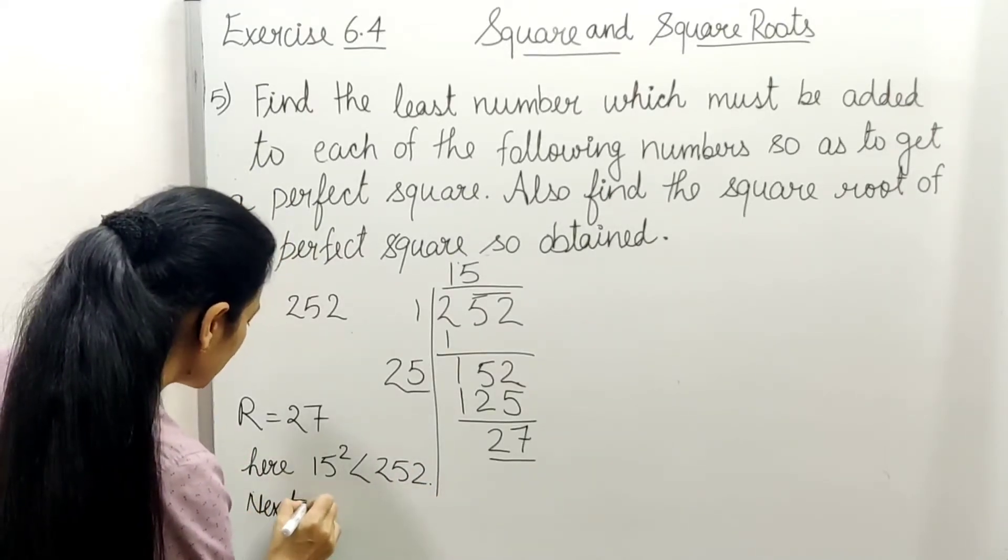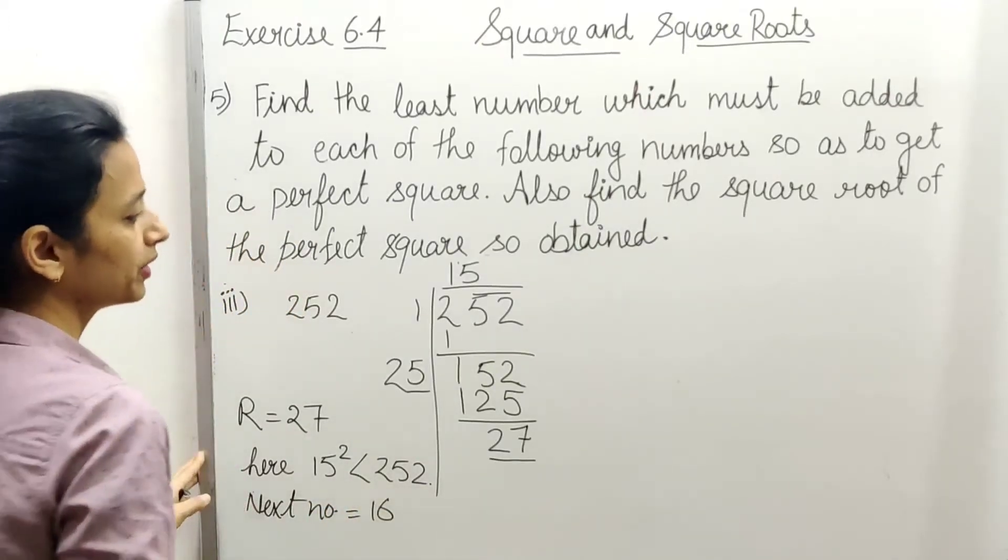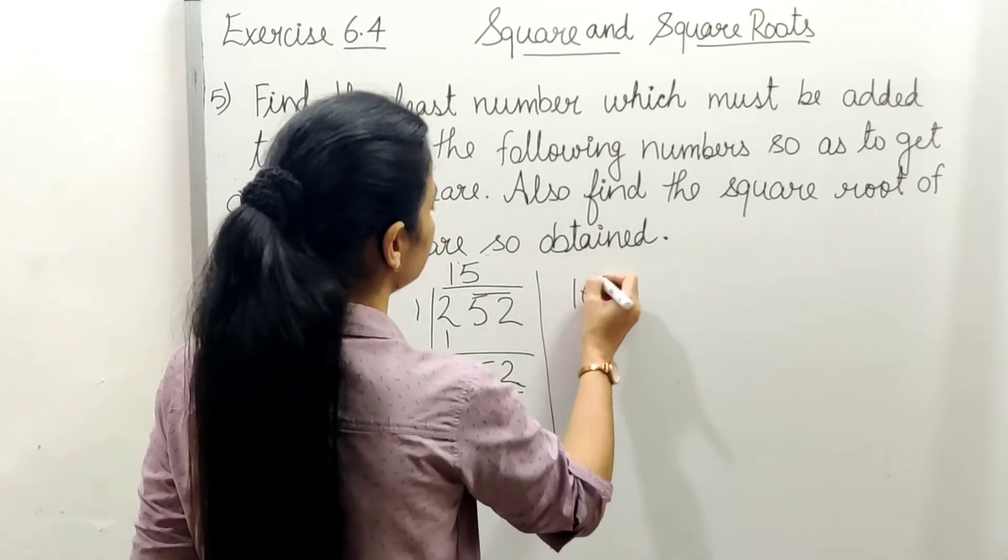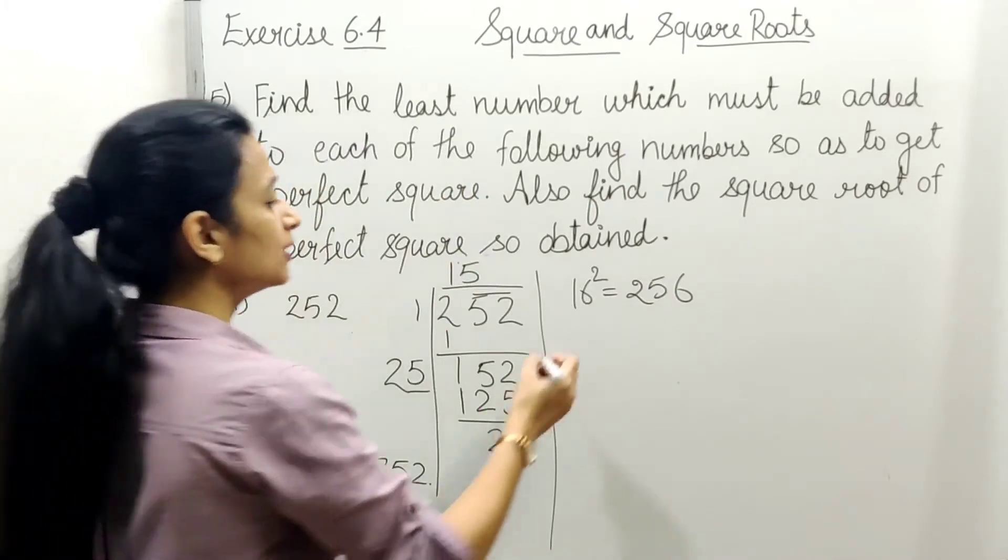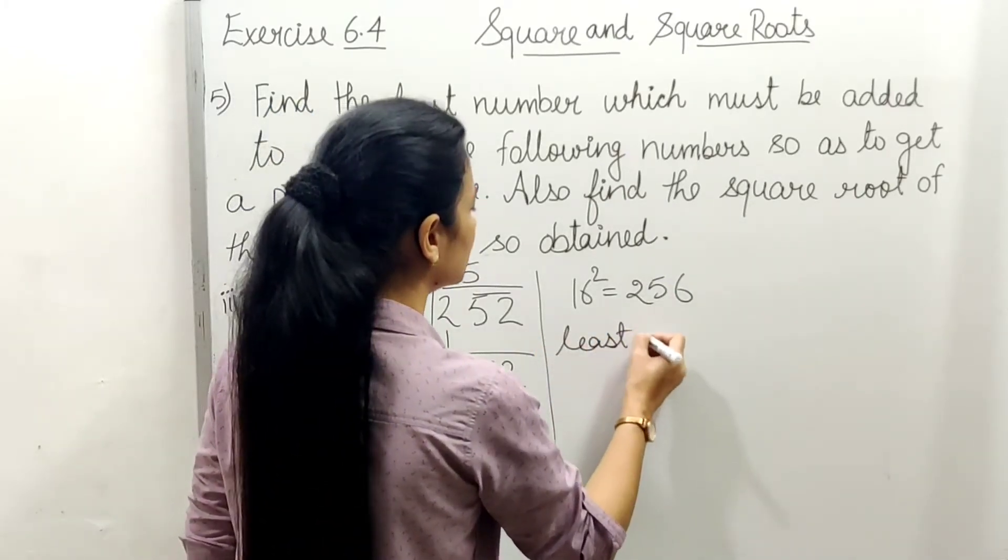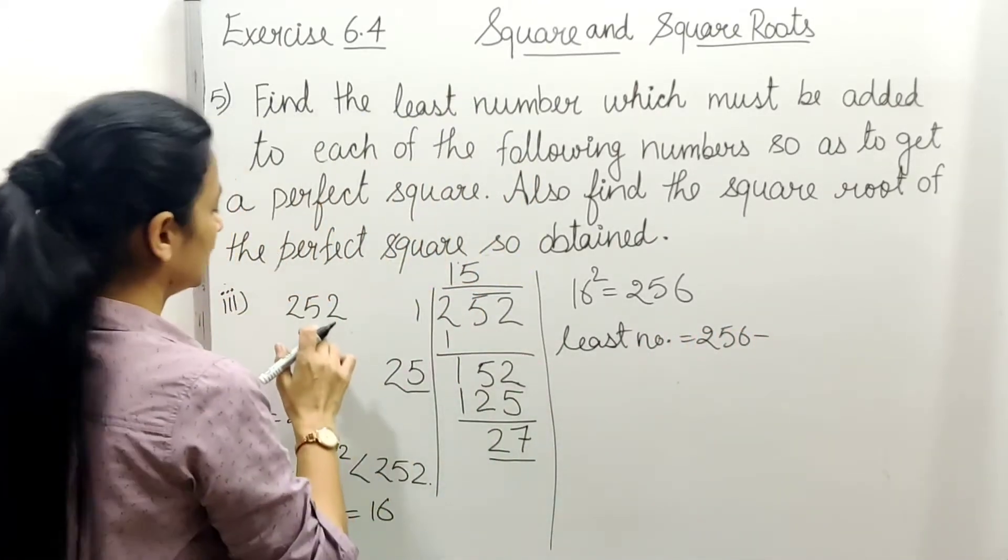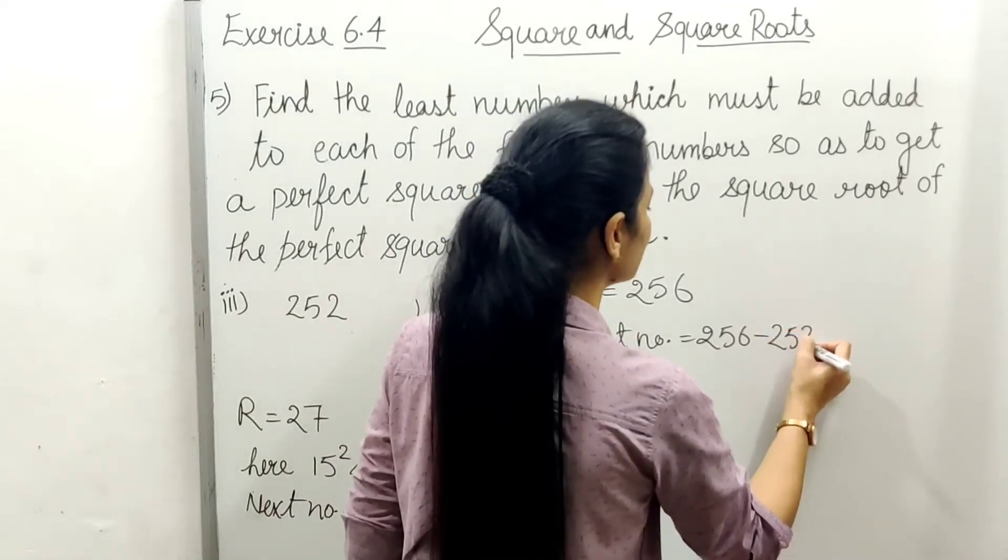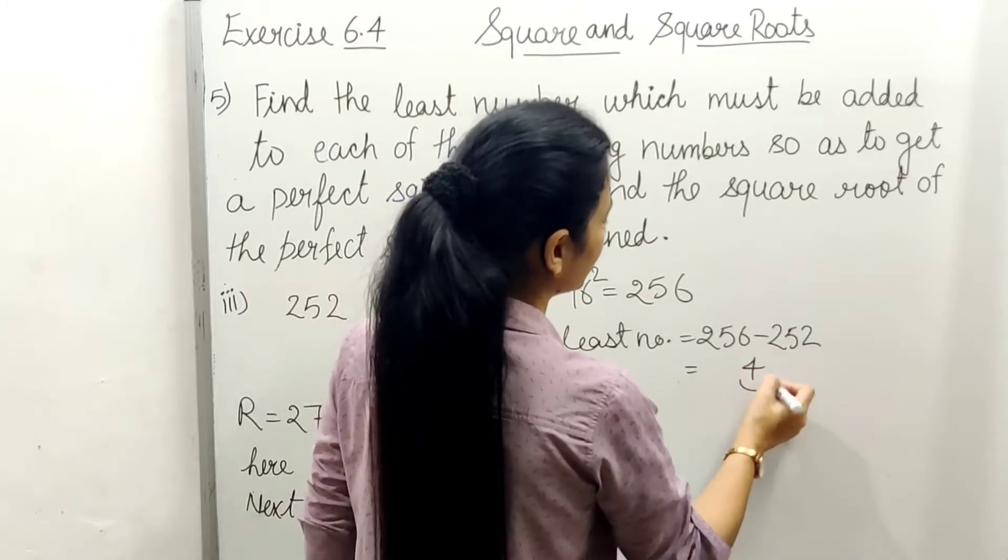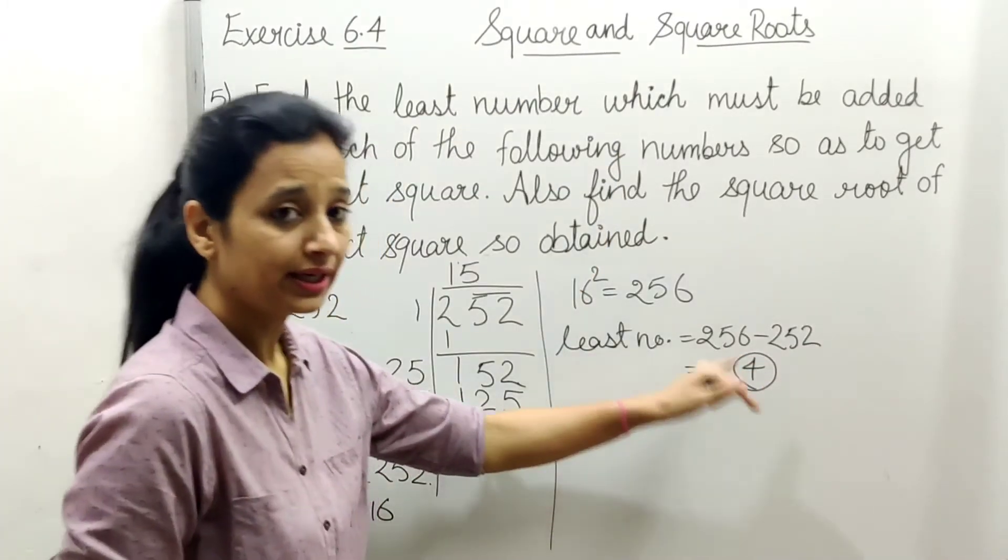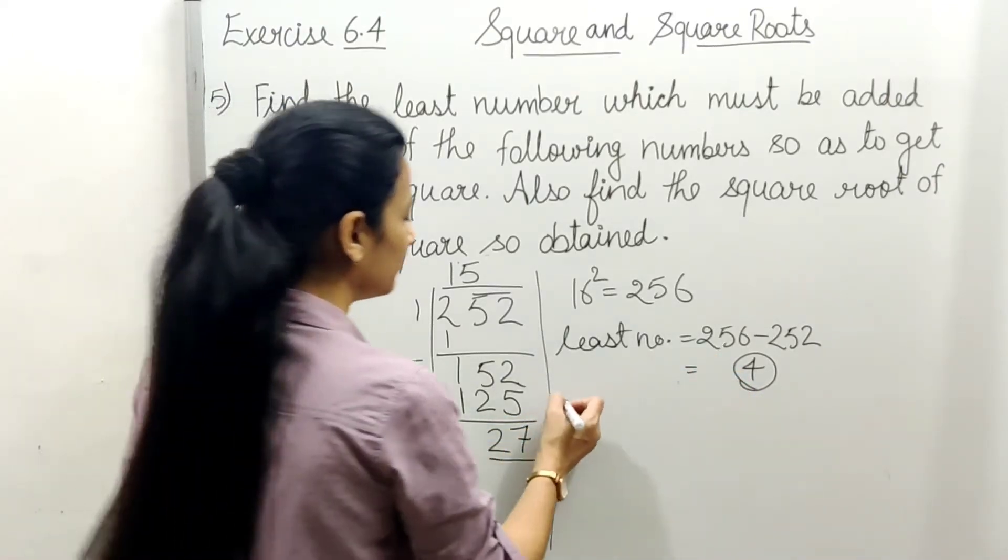So least number will be 256 minus 252, and it will be 4. This 4 means if we add 4 to it, it will become a perfect square. So then, new number equals 252+4=256.